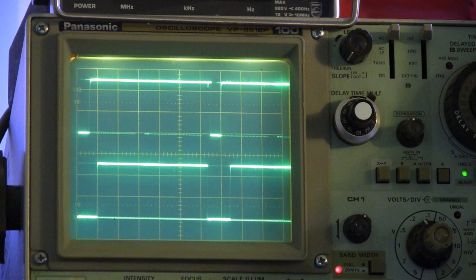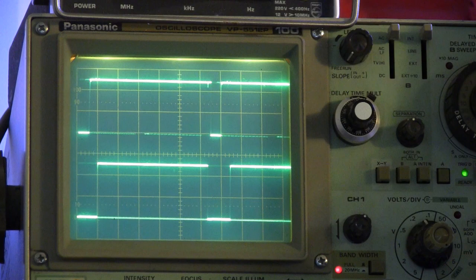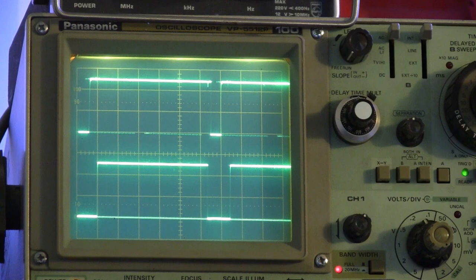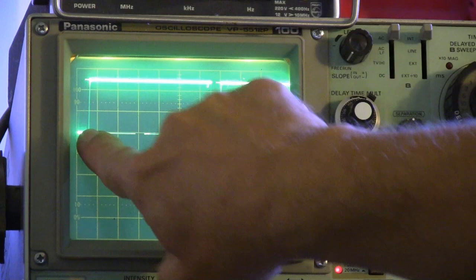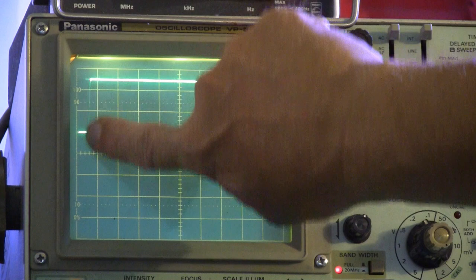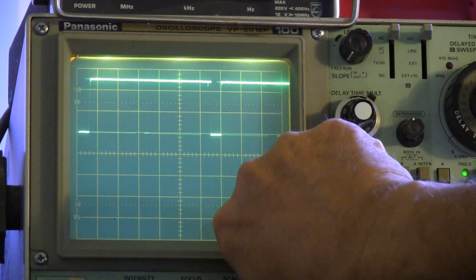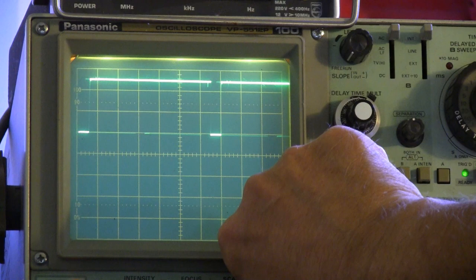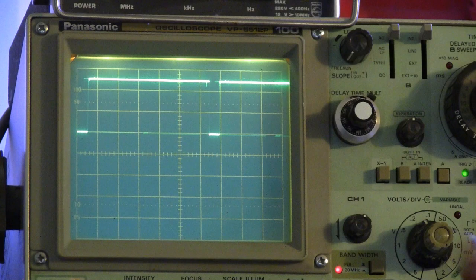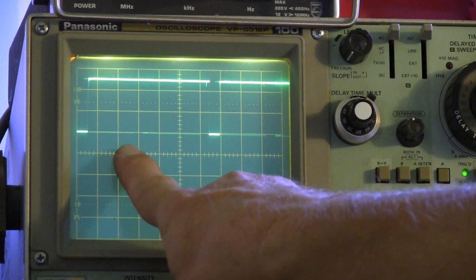And then adjust your triggering level and set your trigger slope to falling slope. Notice that the upper trace is starting on a falling edge. You want to use your horizontal position control to place that start of that trace right on that first vertical line, right at the edge of your scope screen. From that moment on, you can use your divisions to measure things. There's fine divisions down here on the center line.